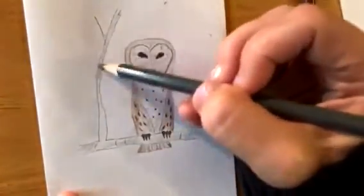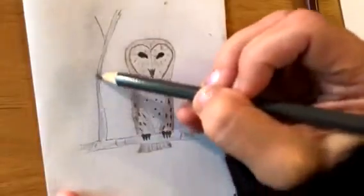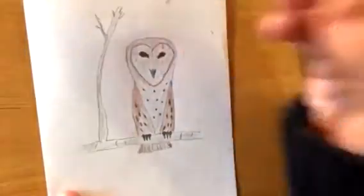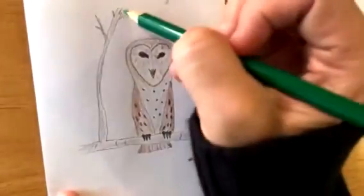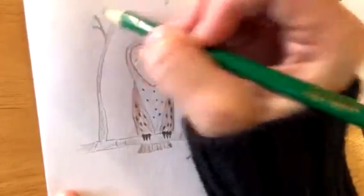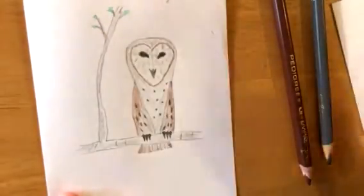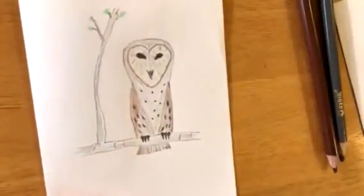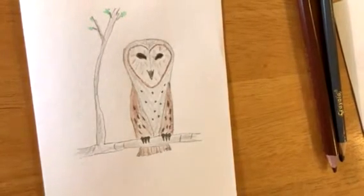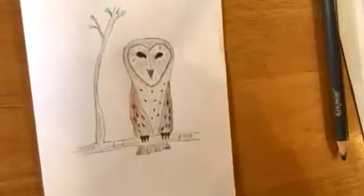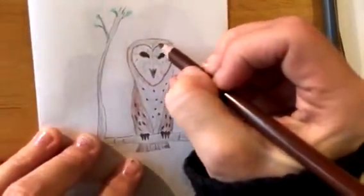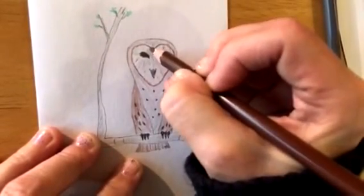If you want you can make a couple little stems here, absolutely not needed, but you can draw some. A little green, a little hint of green there, maybe spring's coming. I'm going to try to emphasize this heart shape on my owl's face a little more.